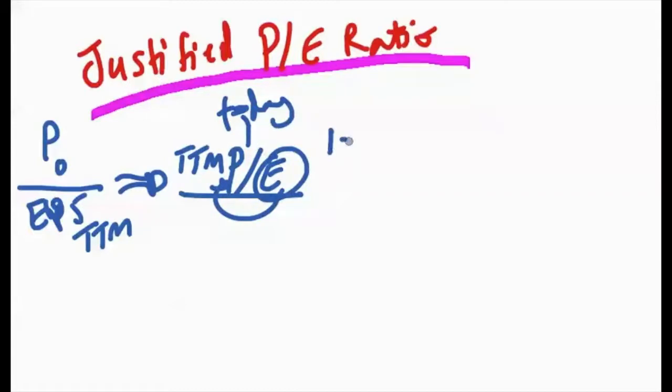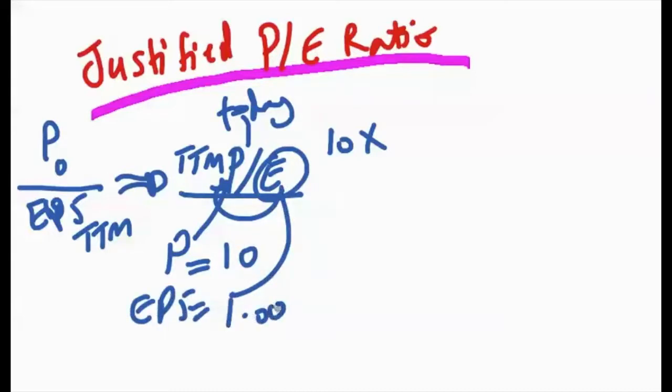You look at the last 12 months, you see what the EPS is for the stock and you come up with that EPS. Let's say that a stock is trading at a P/E ratio of 10 times. Basically it means that the price of the stock is trading at 10 and the EPS is 1. If you just divide 10 by 1, you come up with this 10 times P/E ratio.